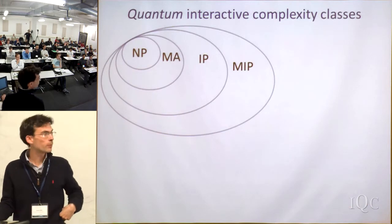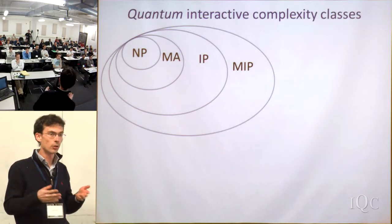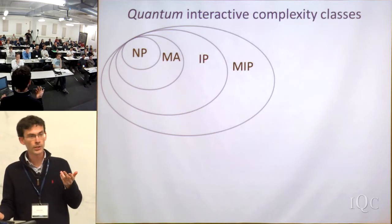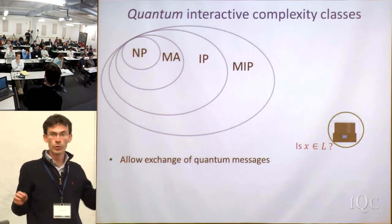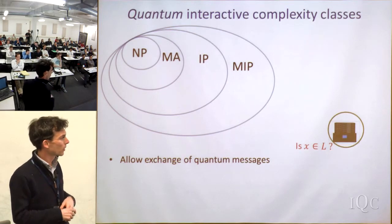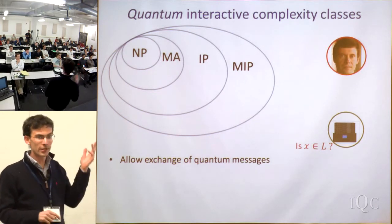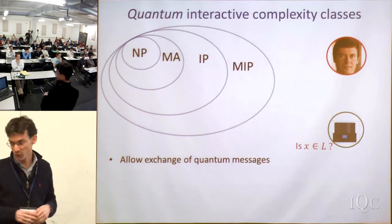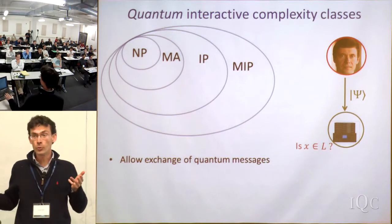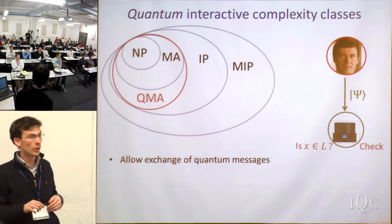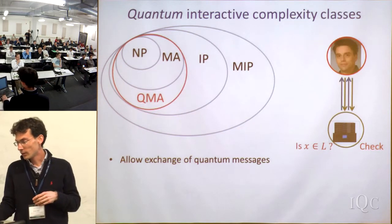Let's move to the quantum setting. Maybe the most natural thing is to make the messages quantum — have quantum communication. So now we have a quantum polynomial-time BQP verifier, and he gets his proof. Kitaev introduced the corresponding class QMA, which is really an analog of classical MA but now with a quantum proof. Presumably that's more powerful — you get something a little bit bigger because you get quantum information from that prover.